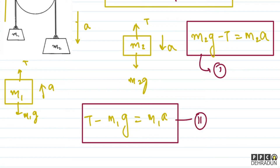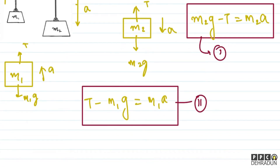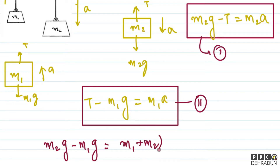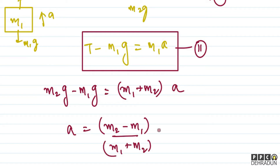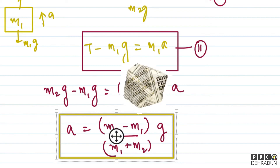This is equation number 1 and this is equation number 2. If we add both equations, T cancels out, and we get: M2g minus M1g equals (M1 plus M2) into a. From here the value of a comes out as: a = (M2 minus M1) divided by (M1 plus M2), multiplied by g. So we have found a.